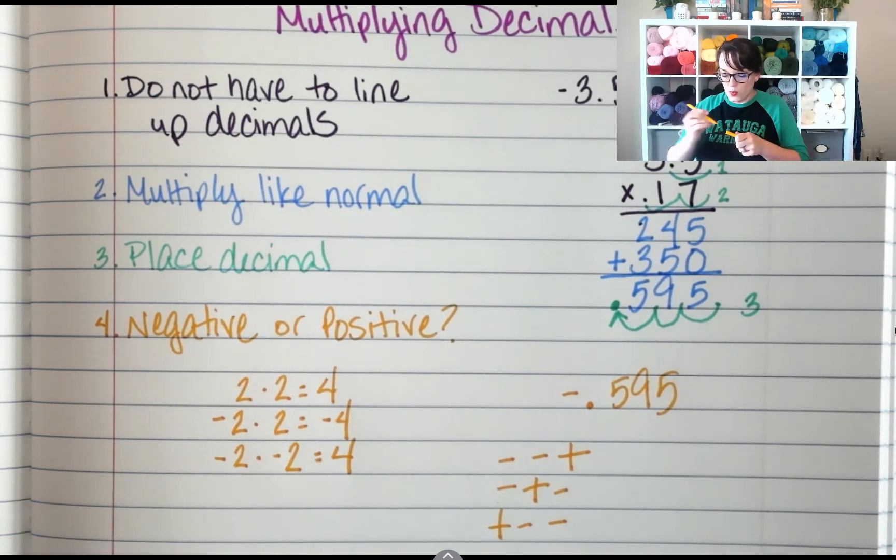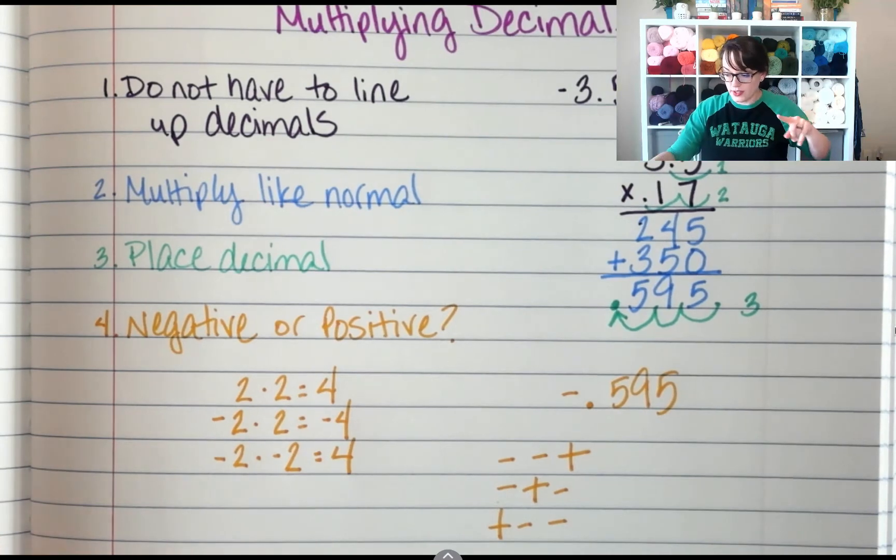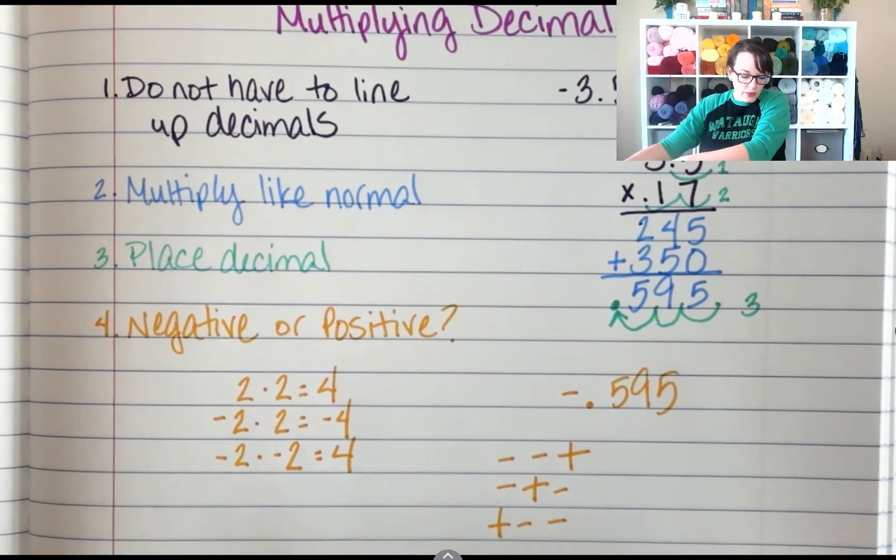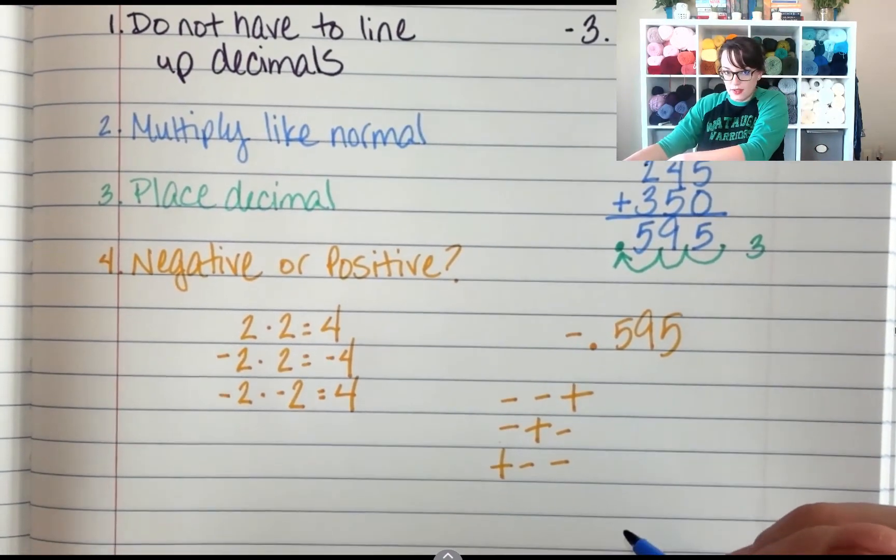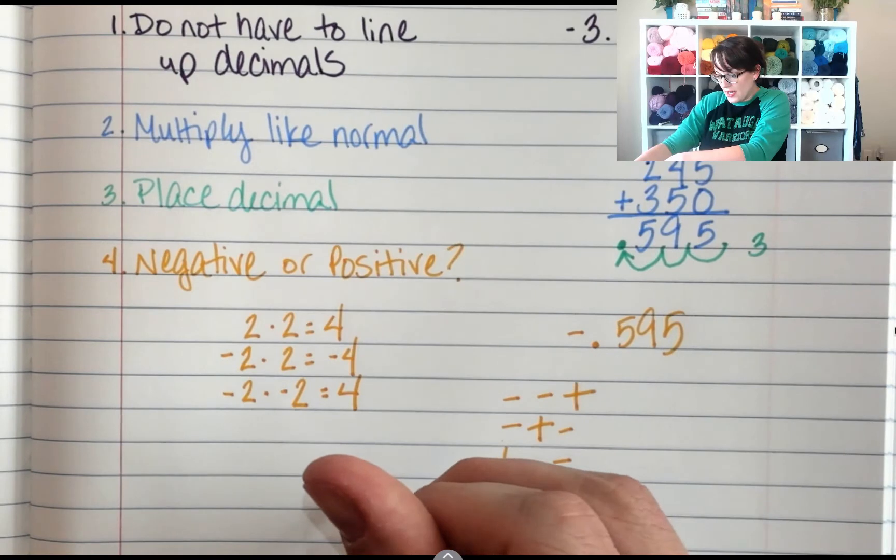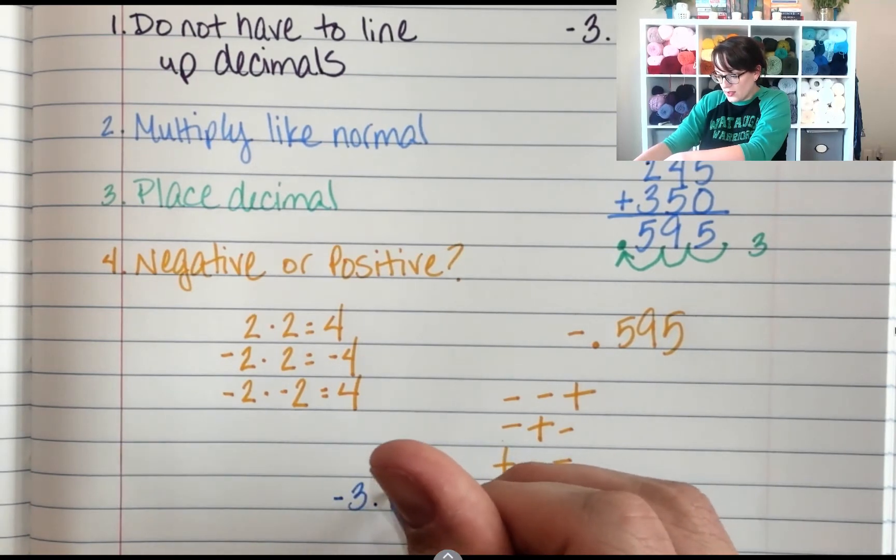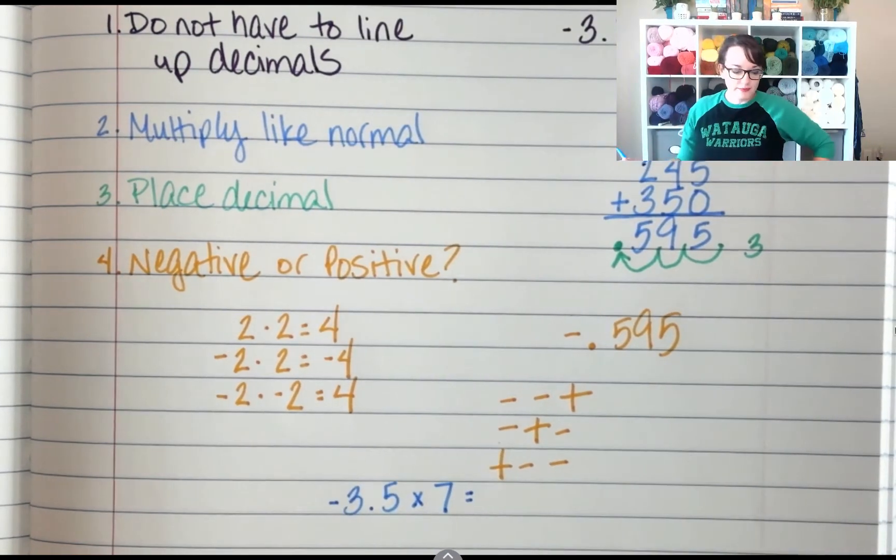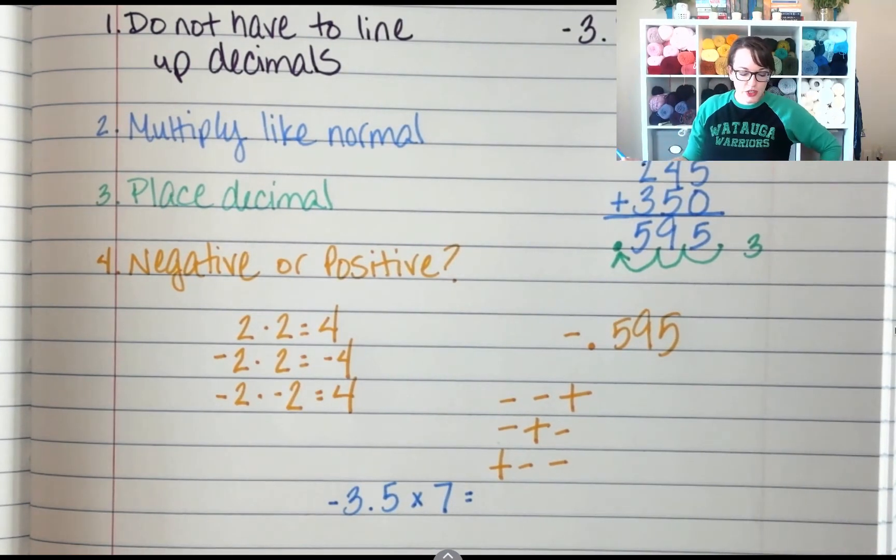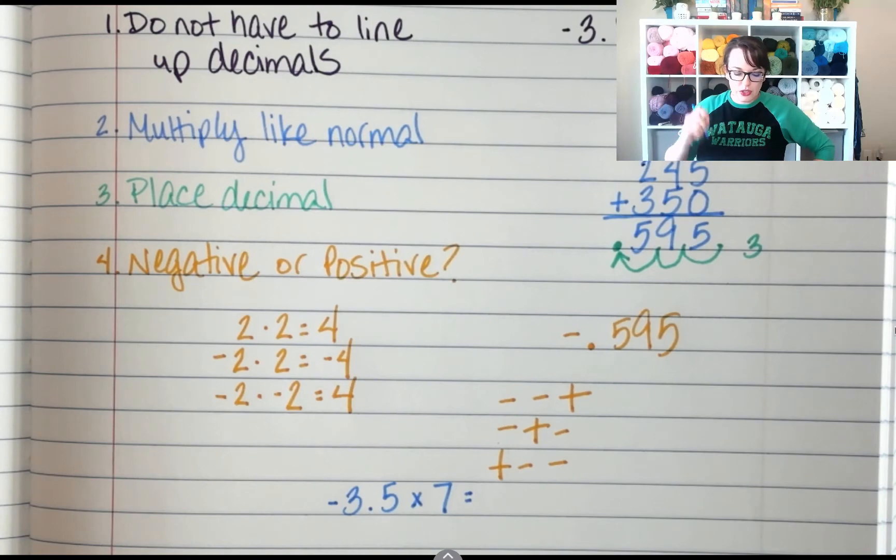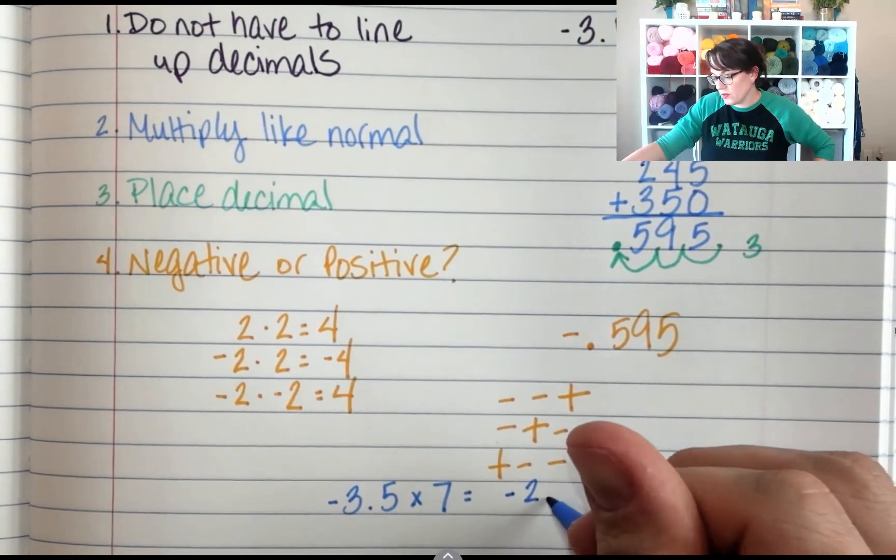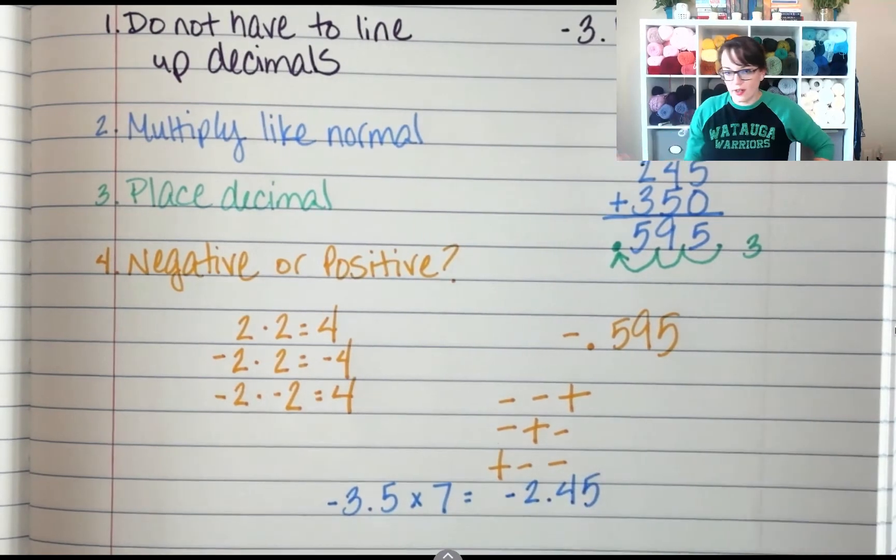Alright, let's do one example where you take over. Let's see if you can figure out what negative 3.5 times 7 is. Negative 3.5 times 7. You should get negative 2.45. Negative 2.45.